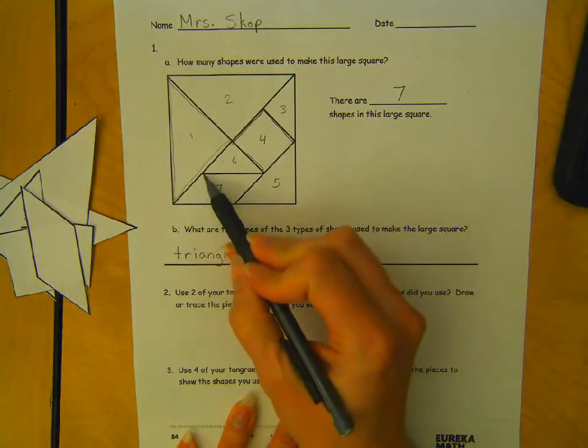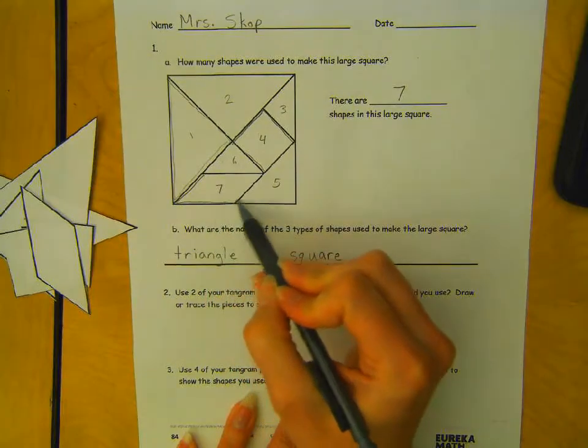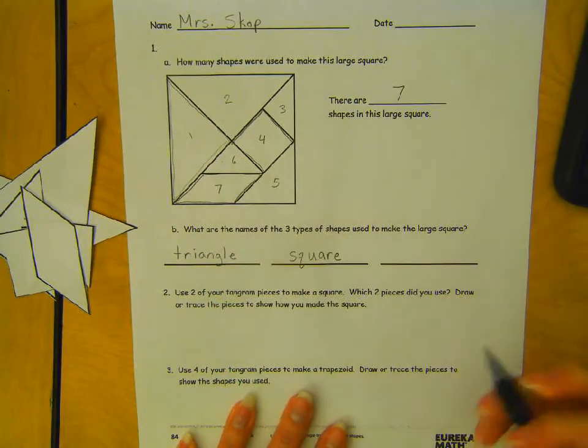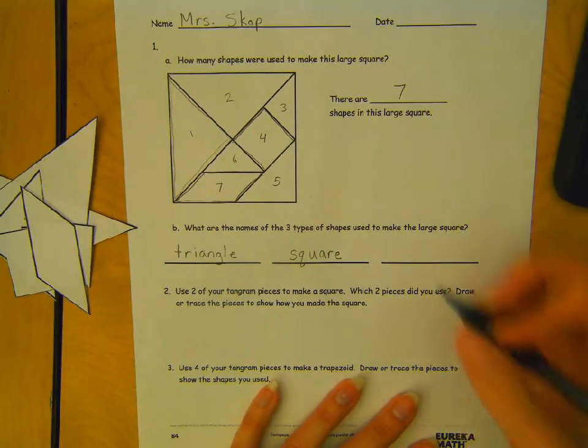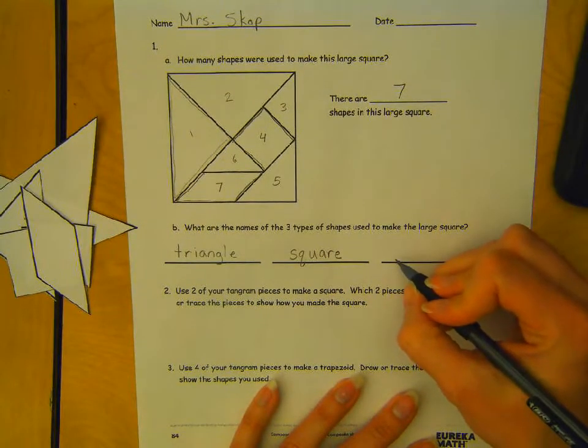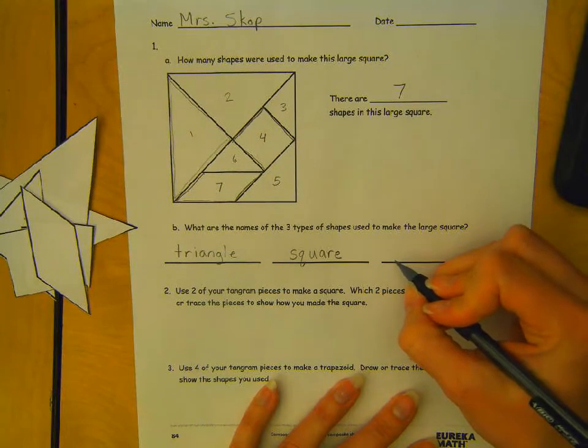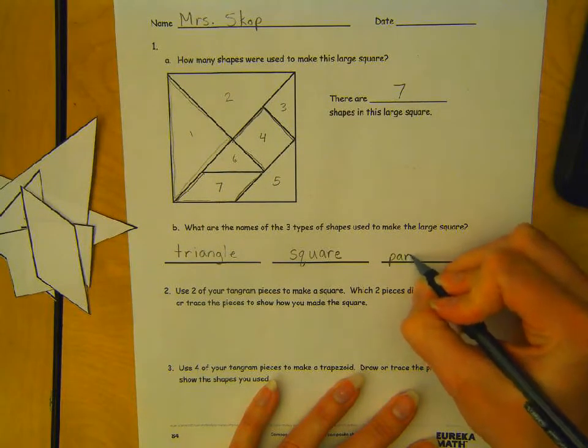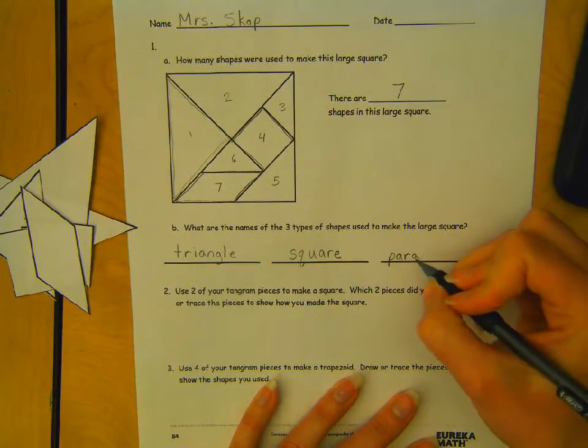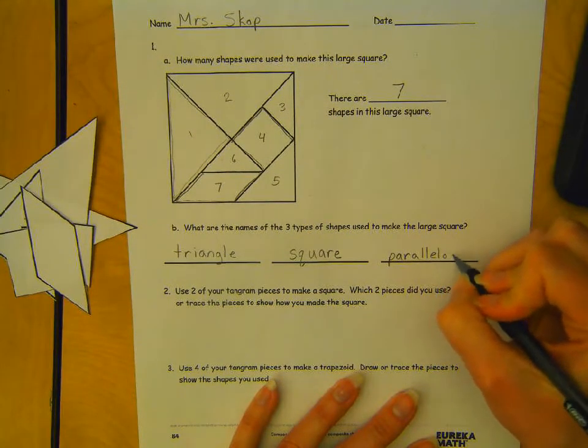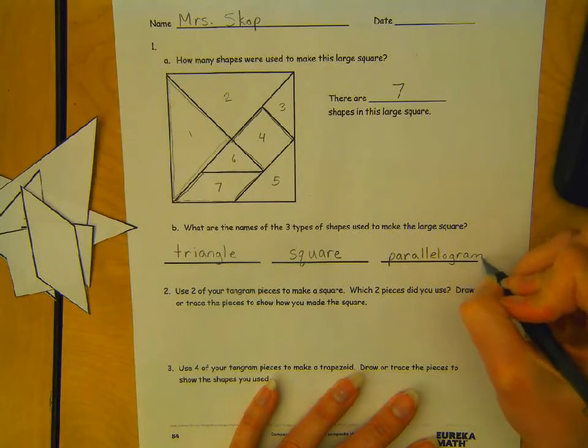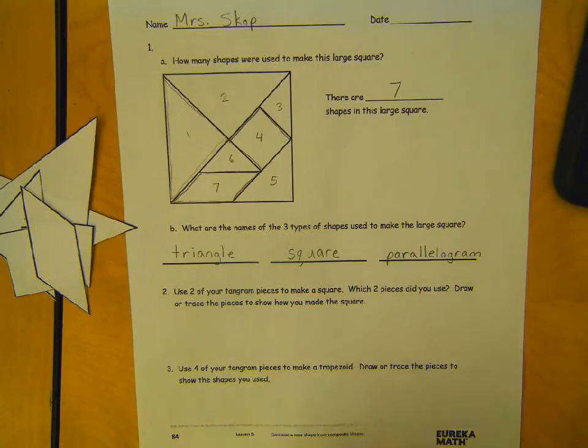And then we have piece number 7, which is a four-sided shape. We're going to call that a parallelogram. That's a tricky word, huh?